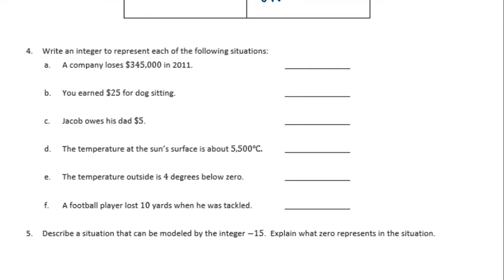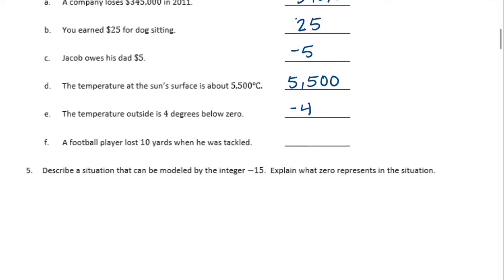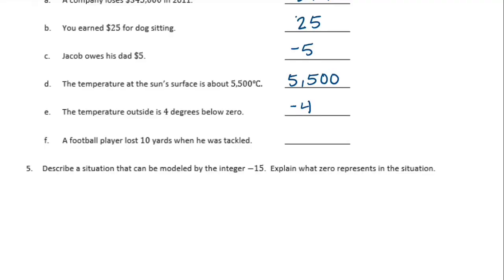Write an integer to represent each of the following situations. A company loses $345,000 in 2011. So they lost money, so they're down negative $345,000. You earn $25 for babysitting. So that's positive. You earned it, you got it. $25. Jacob owes his dad $5. So he does not get the money, he has to pay the money. Negative $5. The temperature at the sun's surface is about 5,500 degrees Celsius. So that's positive 5,500. The temperature outside is 4 degrees below zero. So if it's 4 degrees below zero, then it is negative 4. And a football player lost 10 yards when he was tackled. So he lost 10 yards, so he's negative 10.